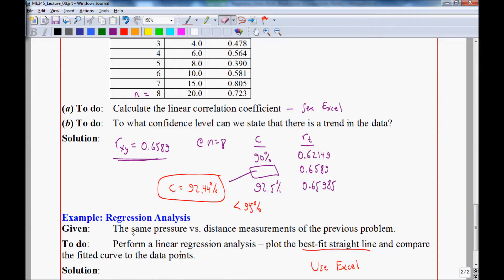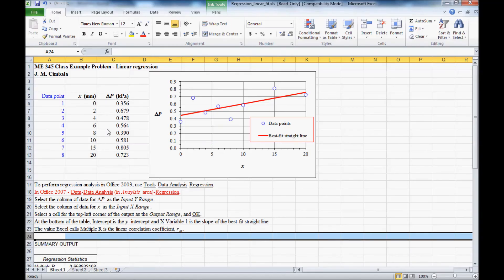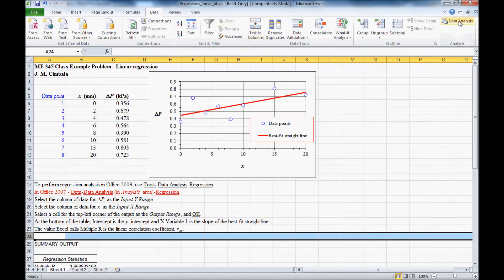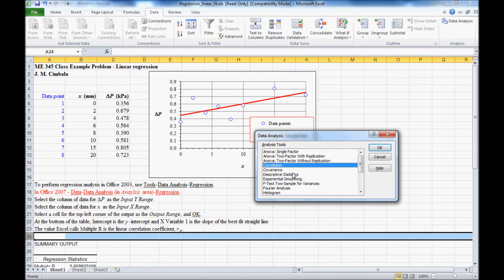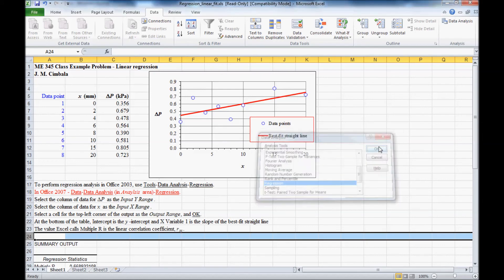Now for the same problem, same set of data, let's do a linear regression analysis and plot the best fit straight line. For this, I'll use Excel. Here are these data in Excel. I've plotted them, and this best fit straight line is produced by using one of the built-in macros in Excel. If we click on data analysis, and let's look for regression.